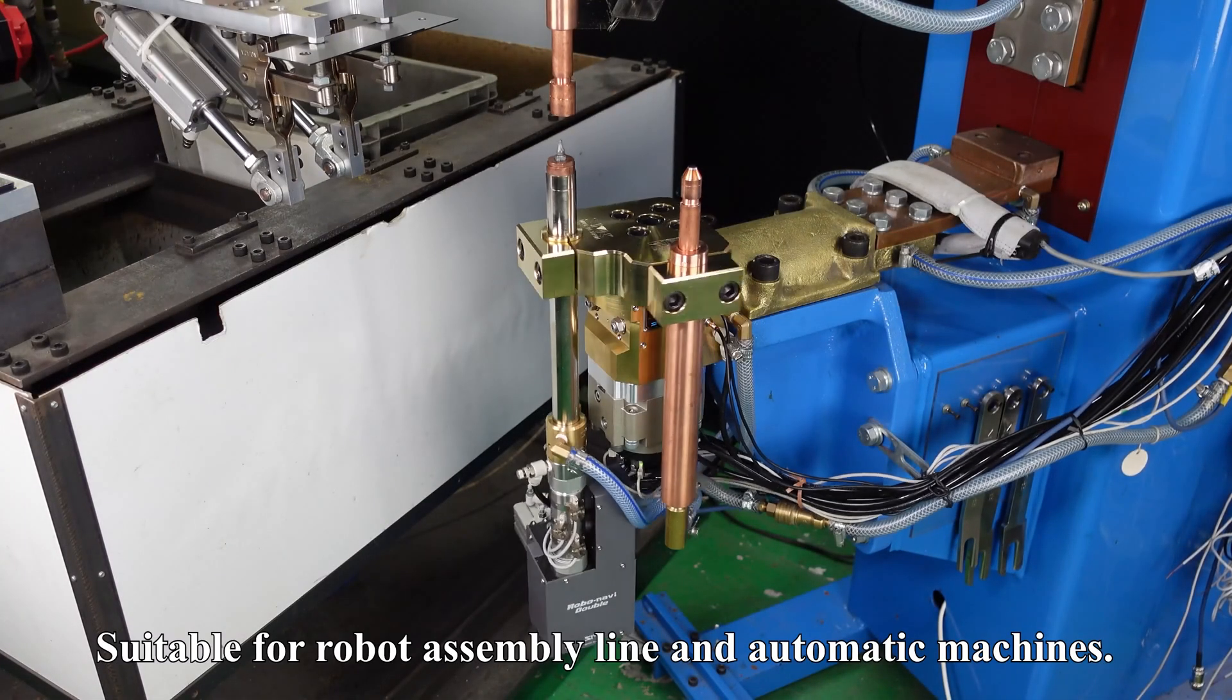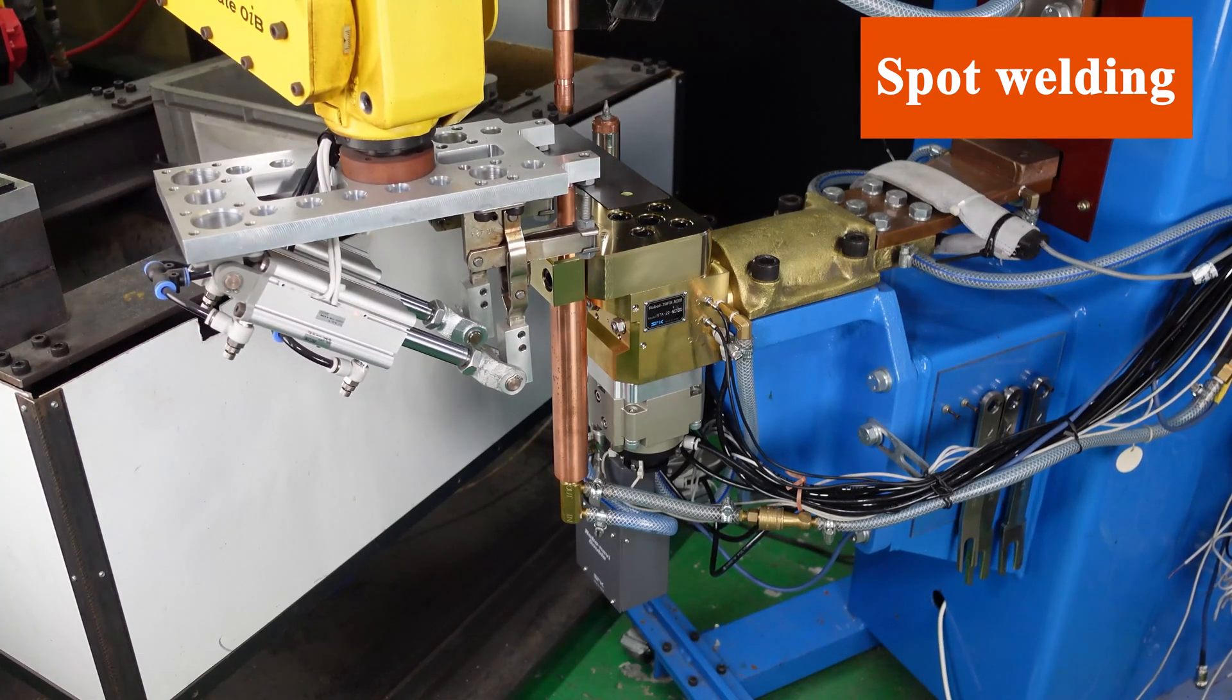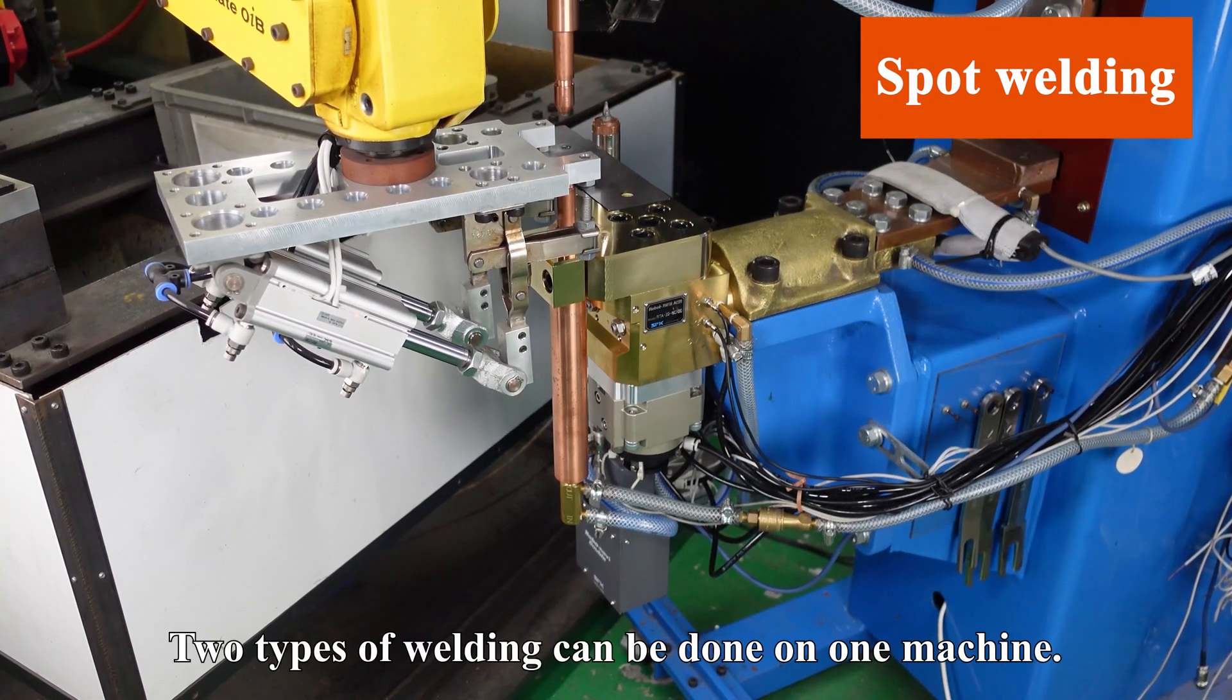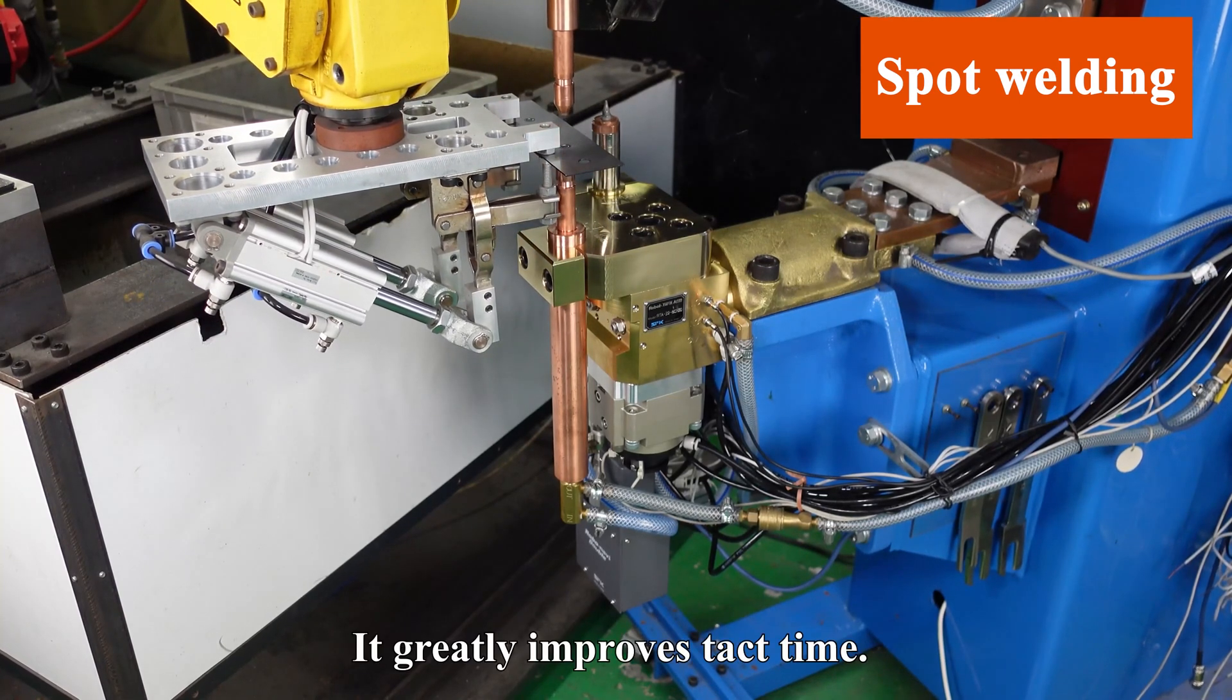Suitable for robot assembly line and automatic machines. Two types of welding can be done on one machine. It greatly improves tack time.